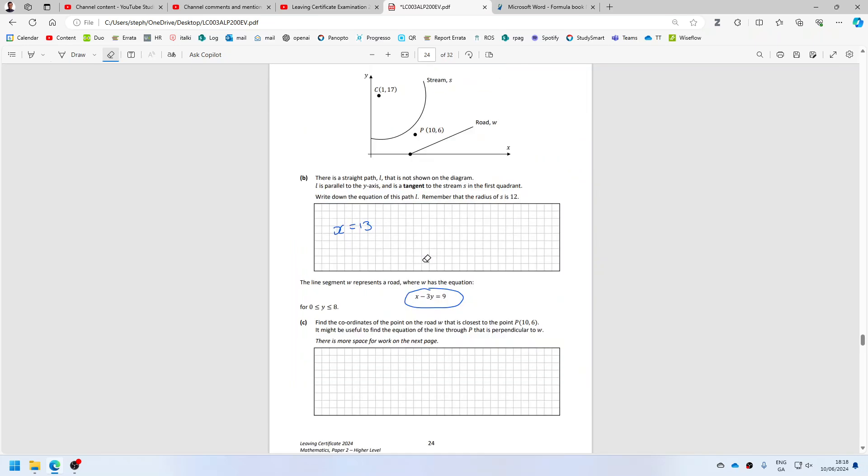All right. Find the coordinates of the point of the road that is closest to 10, 6. So that's this point here. And they even tell us what to do. They find the perpendicular line.